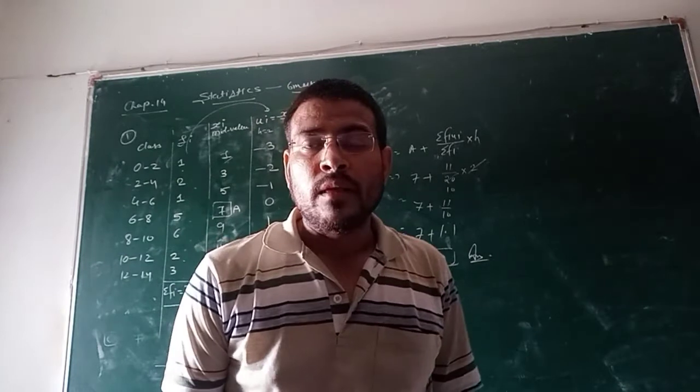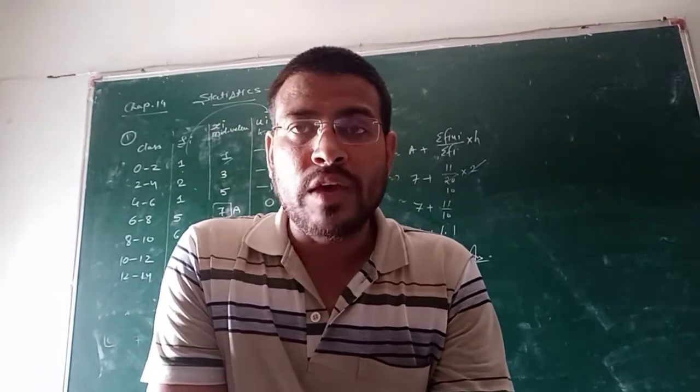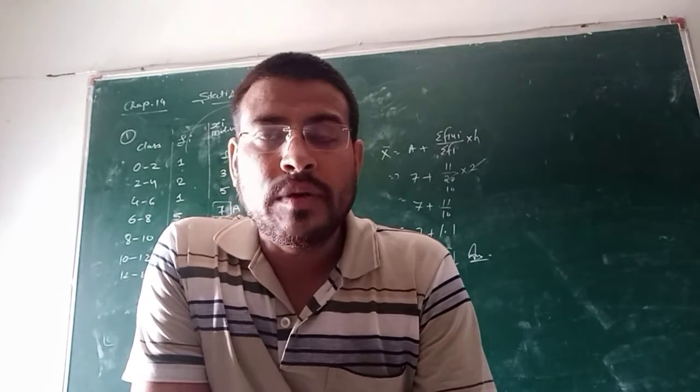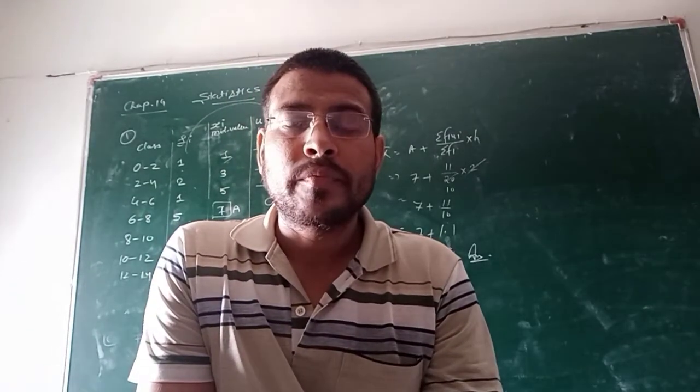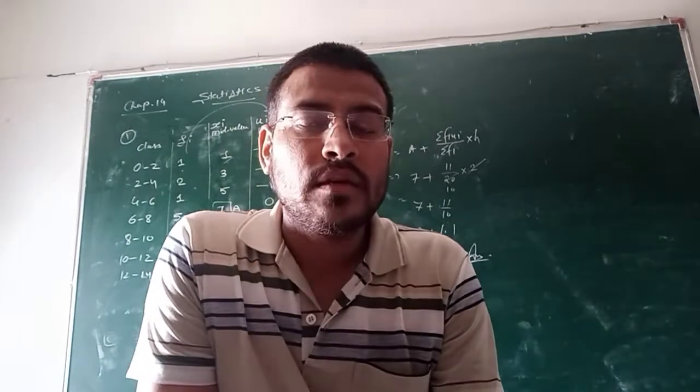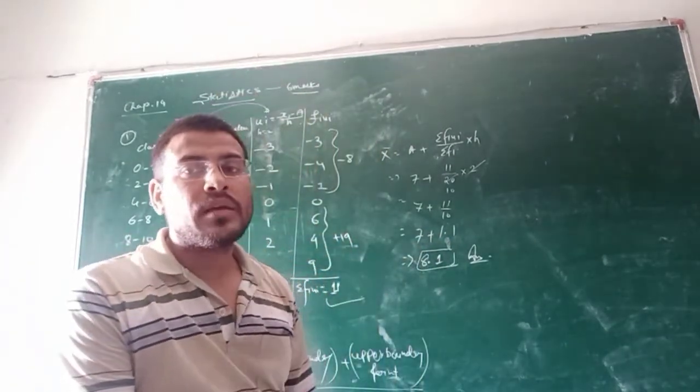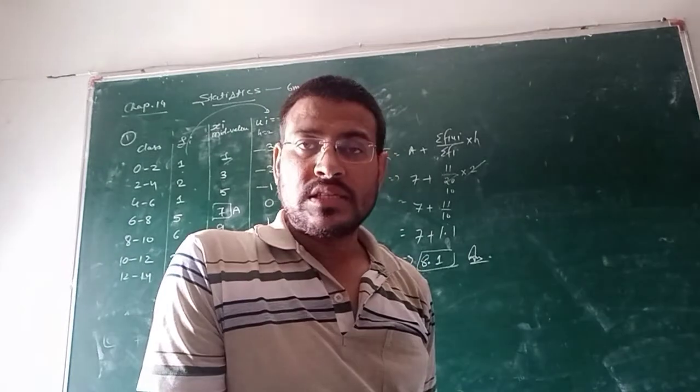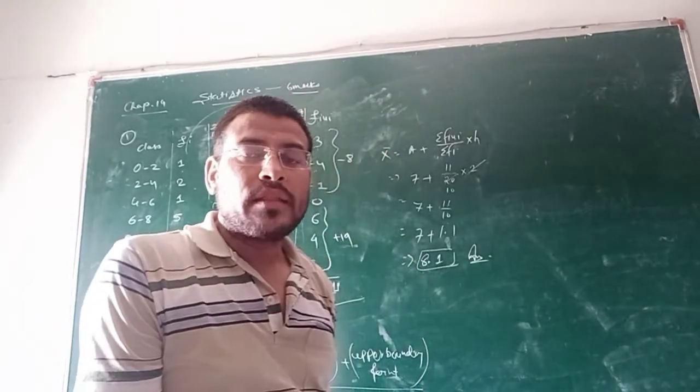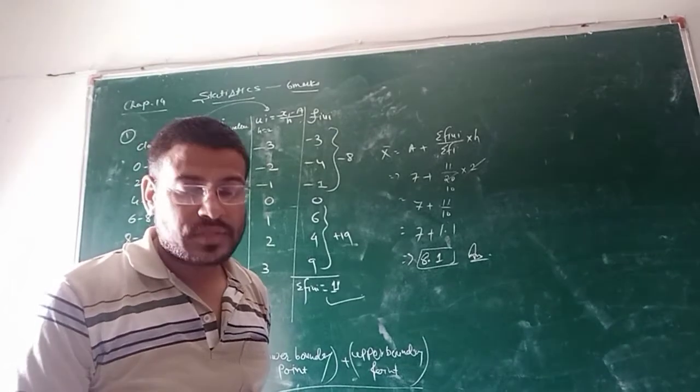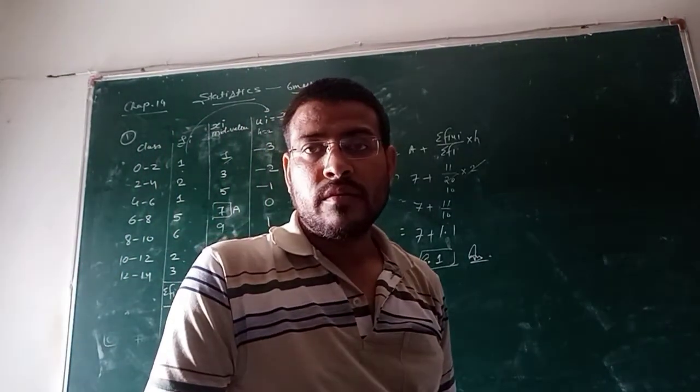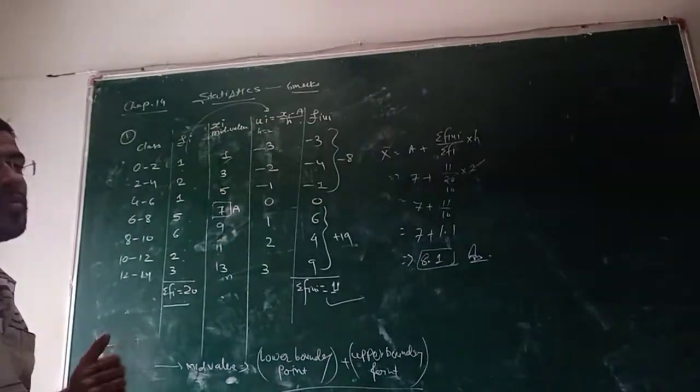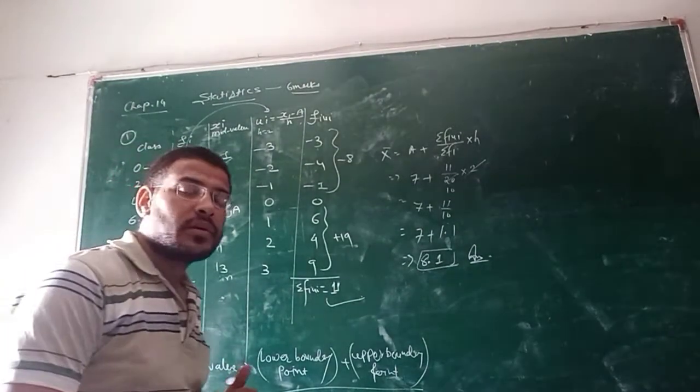Now friends, we have to observe which method should be applicable. So, we have all three methods to calculate mean. The very first one is sigma fi xi divided by sigma fi. Second one, that is assumed mean method. But assumed method is used only when you have not given the proper distance in classes at that time. And the third one, the method we have seen regarding ui.